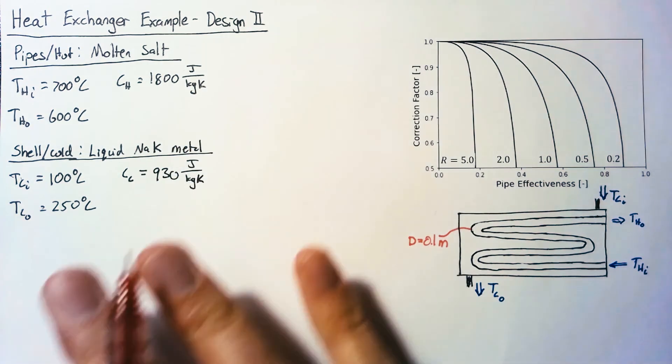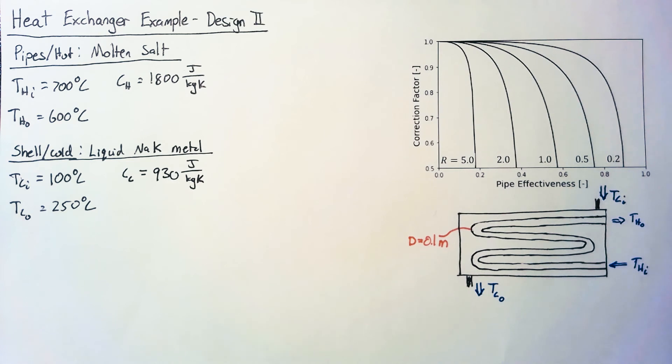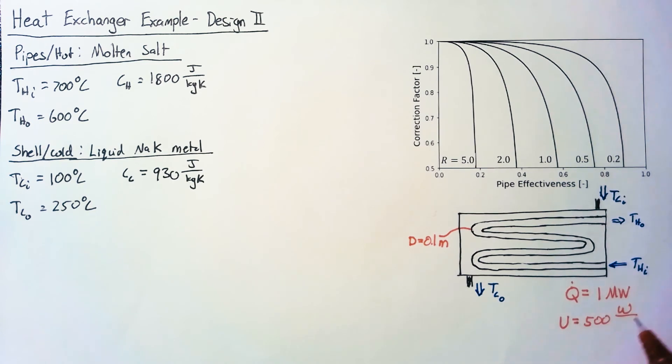So now with our materials out of the way, let's go ahead and talk about the other pieces of information that we need to know. First off, our Q dot, our total heat transfer rate, is going to be 1 megawatt. Secondly, we're going to have an overall heat transfer coefficient, U, which is equal to 500 watts per meter squared Kelvin. So with these pieces of data, plus the plots that we have here, which I'll explain later, we should have enough information to figure out how long our heat exchanger pipe needs to be.